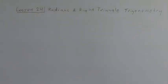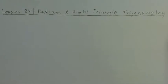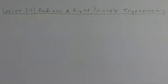Alright, greetings class. Today we're going to be talking about lesson 24, which is on radians and right triangle trigonometry. I know students tend to dislike this topic when they first learn it and have a lot of trouble with the trig stuff. We're going to try and make it as painless as possible because there's a level of trig that most people can actually work their way through without too much trouble. It's just a bunch of ratios, essentially.